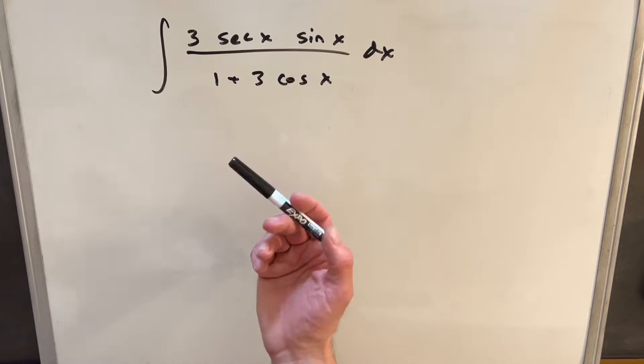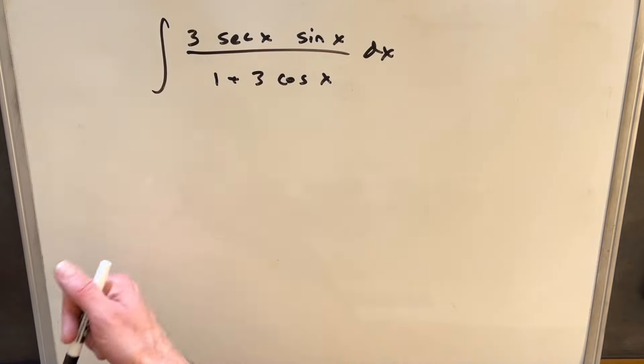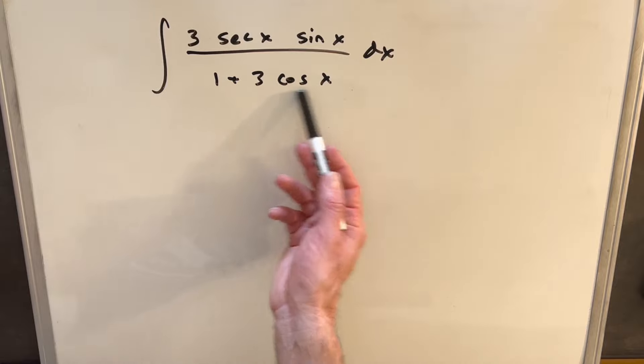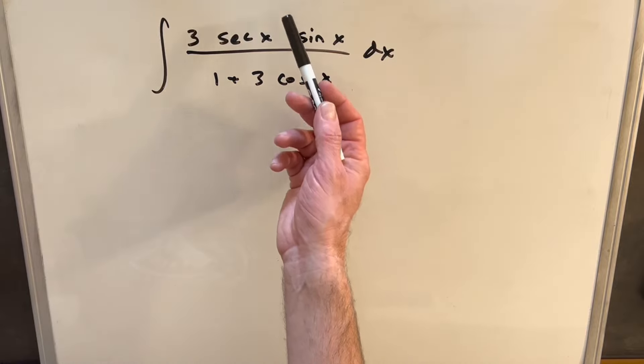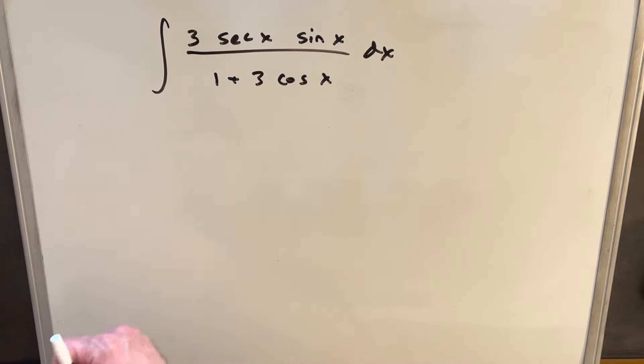What I would like is to make a u substitution. Let's say I do my u as the denominator. Well, if this is my u, I want du in the numerator. But the derivative of this denominator is going to be minus 3 sine x. We get the 3 and we have the sine x, but we get the secant in the way.